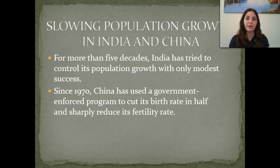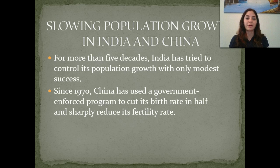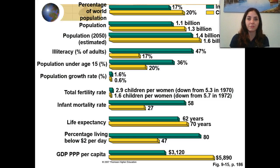China started a family plan in the 1970s, using a government-enforced program to cut its birth rate in half, and it's sharply reduced its fertility rate as well.